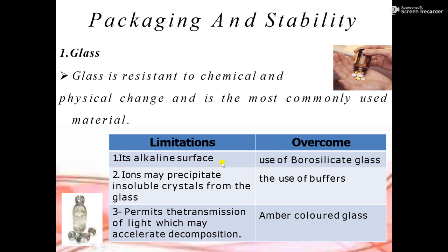The first packaging material is glass. Glass is resistant to chemical and physical change and is the most commonly used material. However, there are limitations: glass surface is alkaline, ions may precipitate and form soluble crystals, and glass permits transmission of light which may accelerate decomposition. To overcome this, borosilicate glass should be used, along with buffers and amber colour glass in packaging.